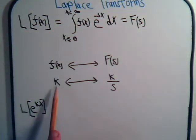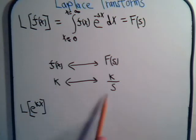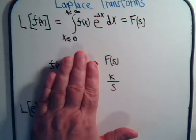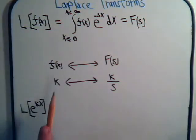In other words, if we have the Laplace Transform of k, we know that's just k divided by s. But we also want to go the other way. If we have k over s as a Laplace Transform, we know the function has to be k.